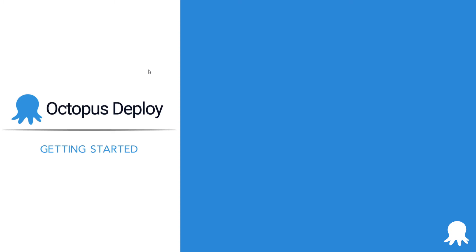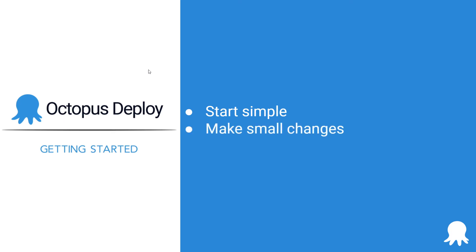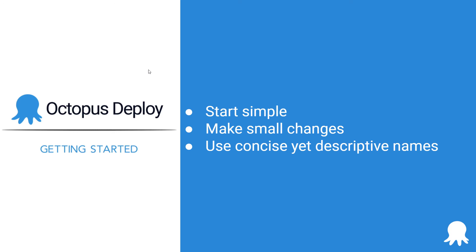Now it's your turn to create your first deployment process. When starting out, don't worry about all the possible options — start with the simplest deployment process possible for your application. Add one step at a time and test after each change. Use concise, meaningful names for your steps — brevity goes a long way. Links to additional resources and support can be found in the description below. Thank you for watching.